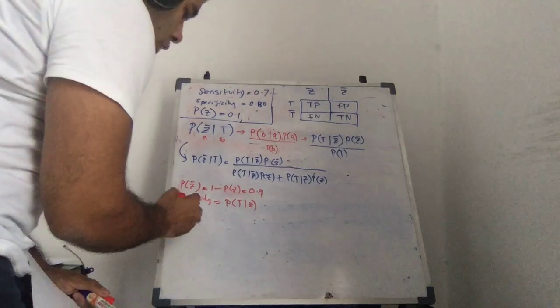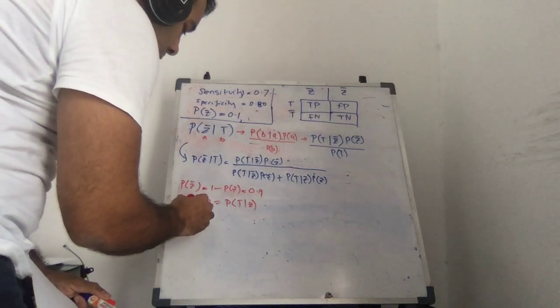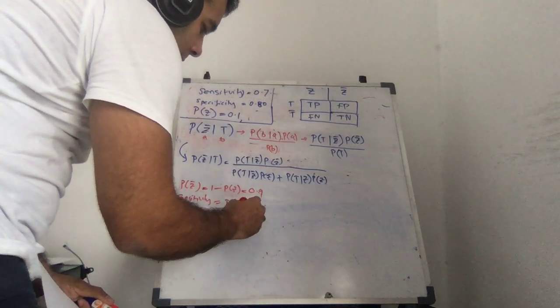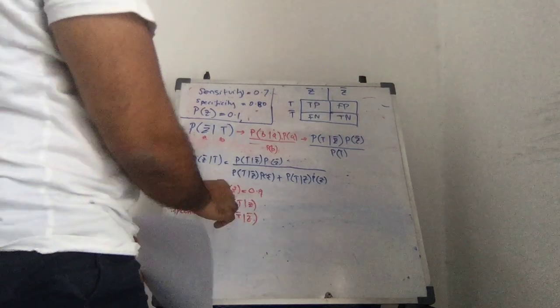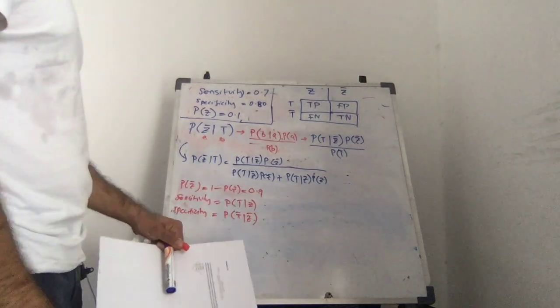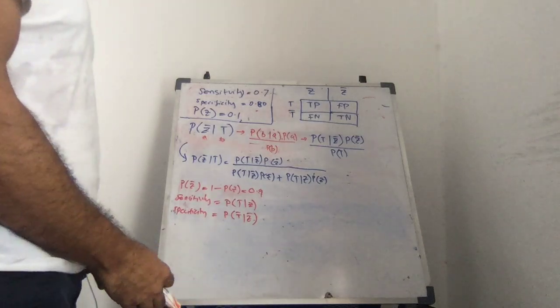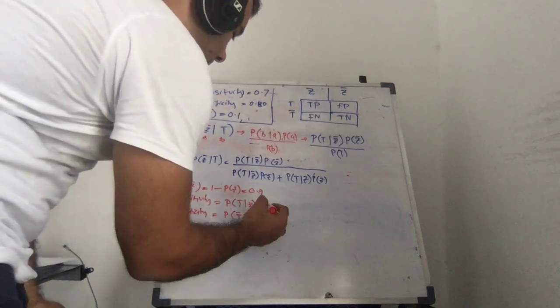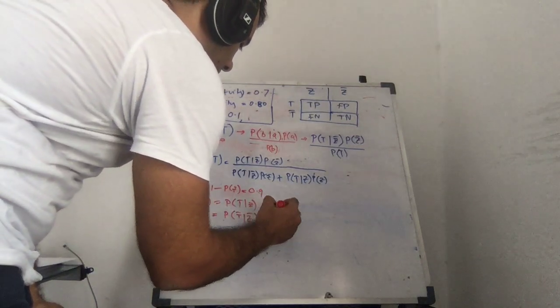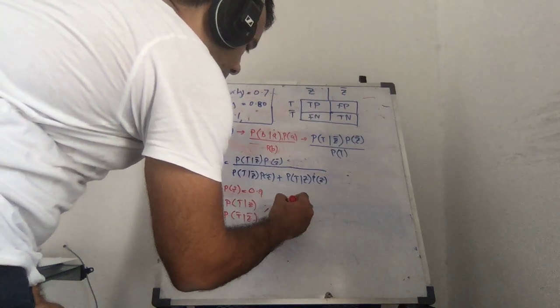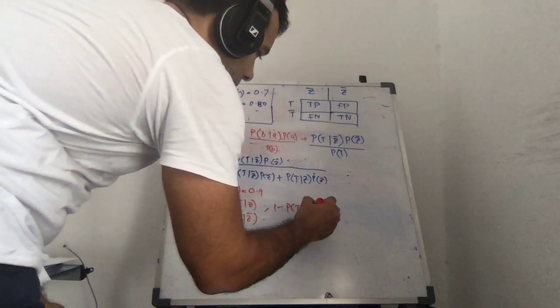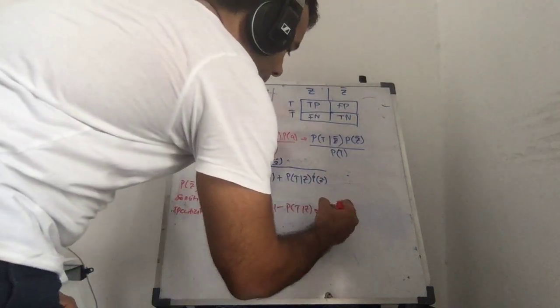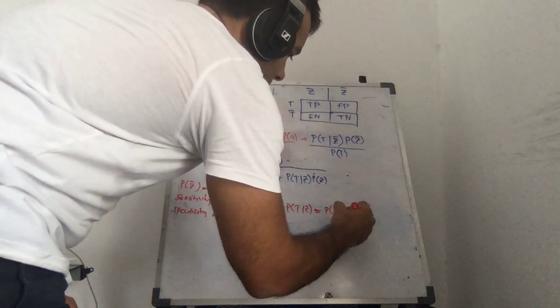And then the specificity is the probability, how good is your test at picking up people who don't have the disease? So, how good is it saying, nope, you don't have the disease, right? So, we can do this. We can say 1 minus the probability of T given Z is equal to the probability of not T given Z.